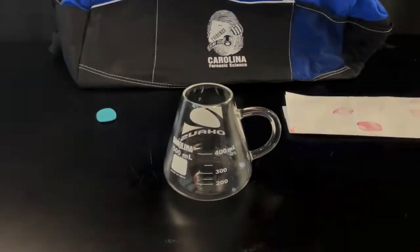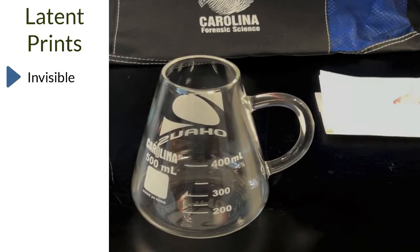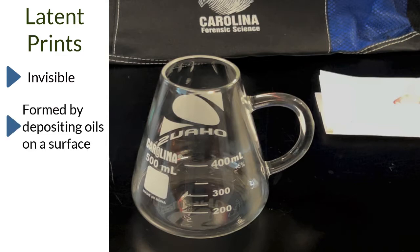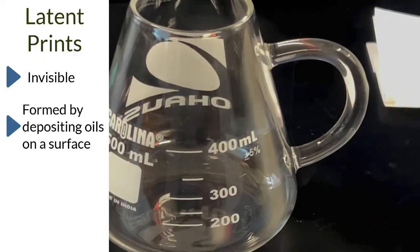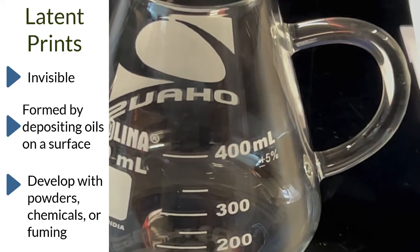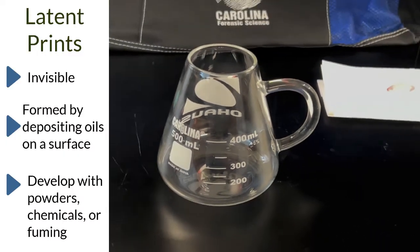The next type of prints are latent prints. Latent prints are invisible prints formed by depositing natural oils on a surface. They must be developed to become visible. Three common development techniques for latent prints are powders, chemicals, or fuming.